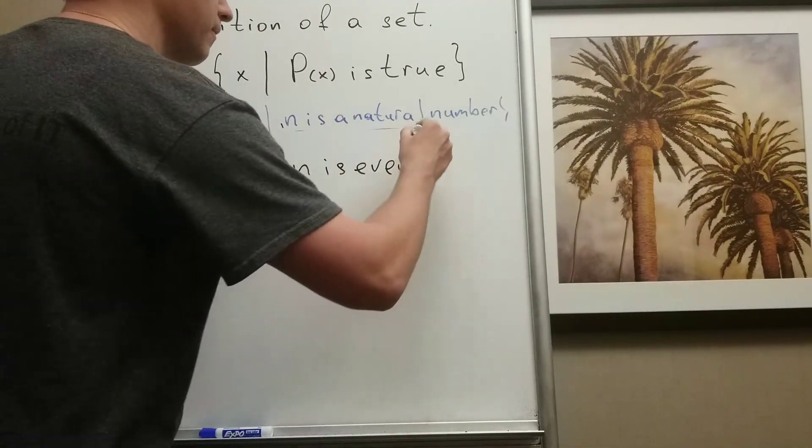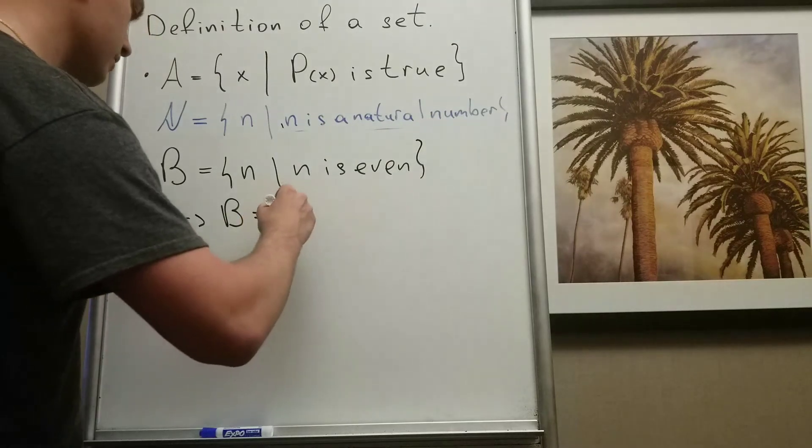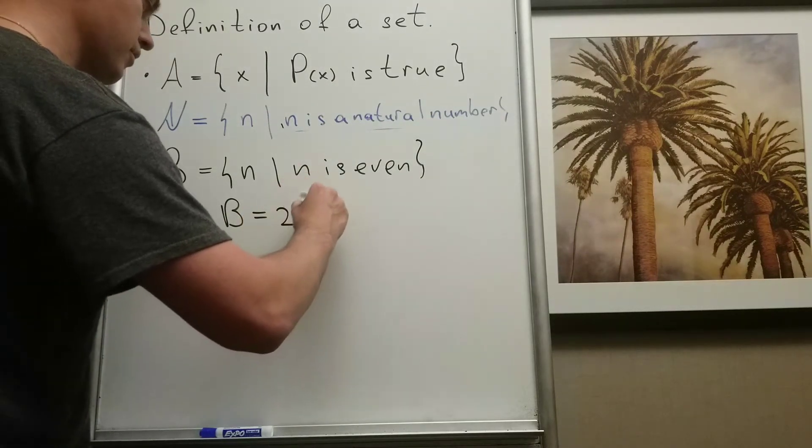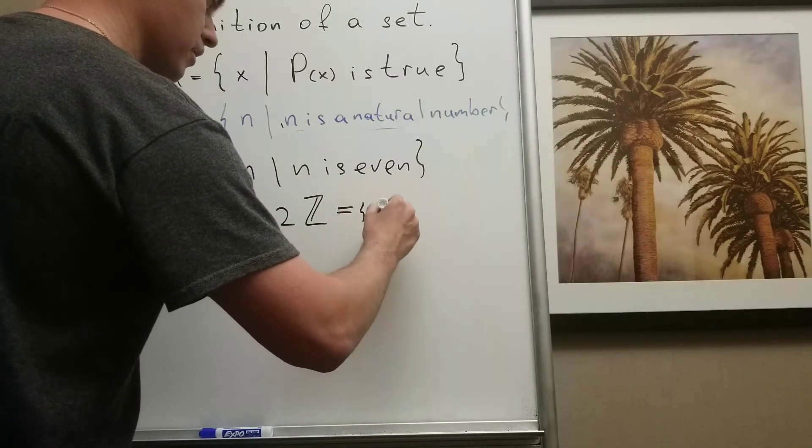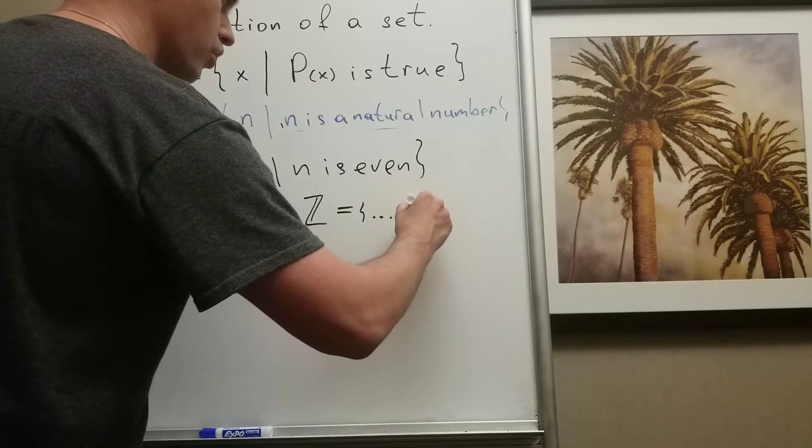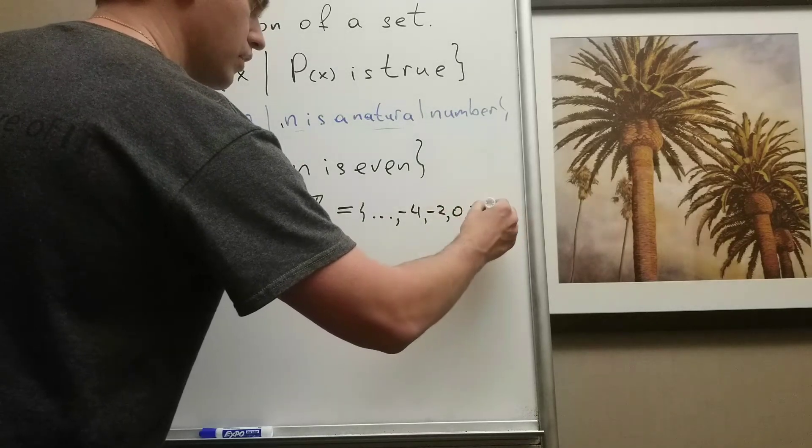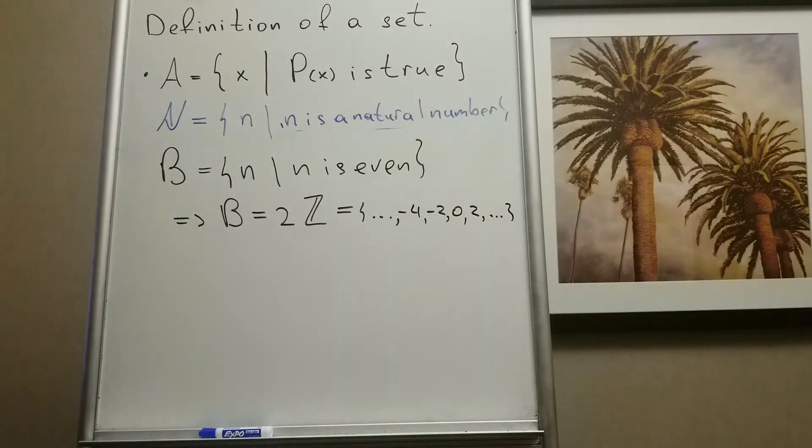N is even, yeah. So from here you can easily see that B is equal to 2Z. Why 2Z? Because it's going to be elements: negative 4, negative 2, 0, 2, etc. So this is the definition of a set.